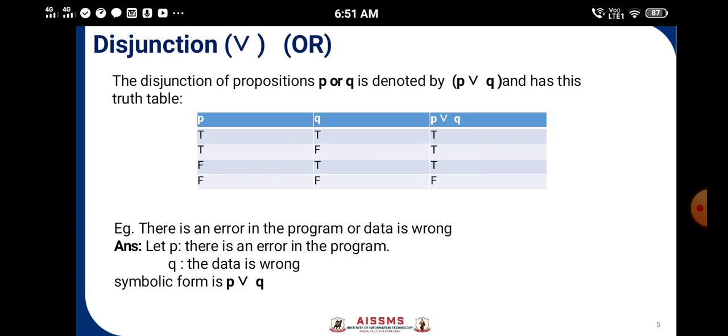Example: 'There is an error in the program or the data is wrong.' So the p statement is 'there is error in the program,' q statement is 'the data is wrong.' So in symbolic form, we write p ∨ q.